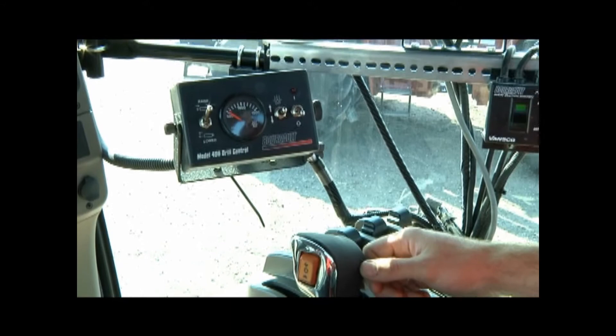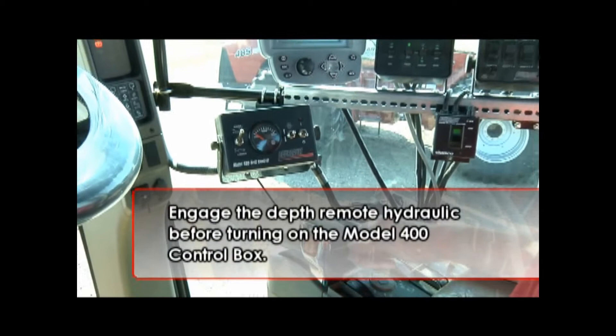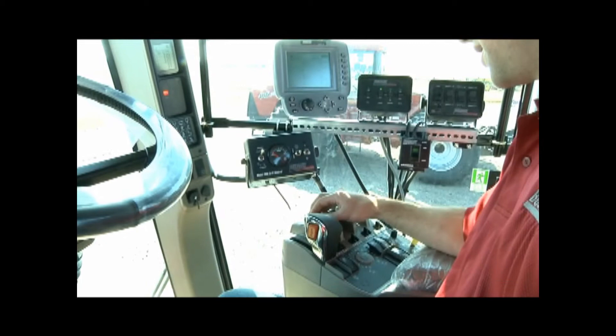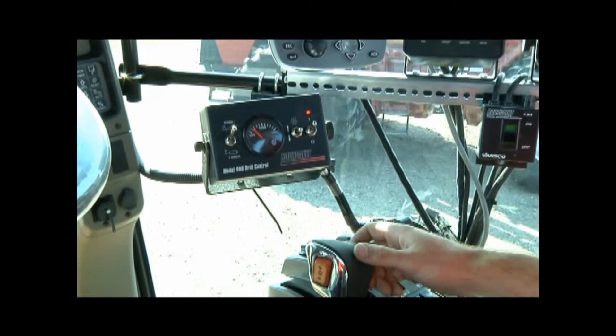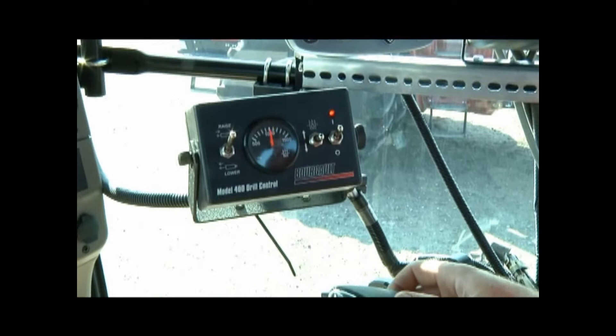The toggle on the right-hand side is for power. Always ensure the unit is unfolded into field position, all persons are clear of the openers, and the depth control hydraulic remote is engaged before turning on power to the control box. When power is on, you will see a red light indicating the unit has been activated.